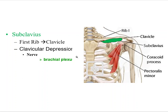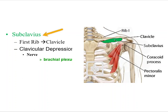The final muscle, also on the anterior side — we can see our pectoralis minor right here going to three ribs. And then right under, from the first rib to the inferior side of the clavicle, is subclavius, right here in green. It is a clavicular depressor — it creates clavicular depression, pulling the clavicle down. Its neural innervation is the brachial plexus.